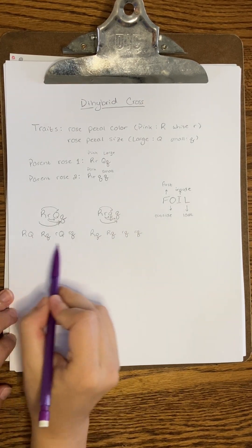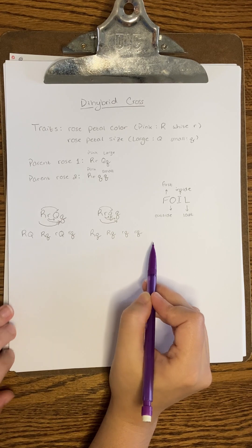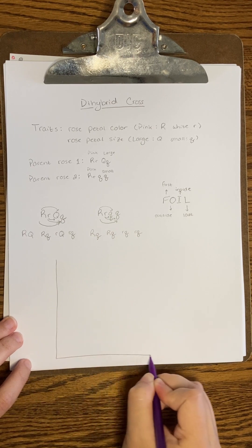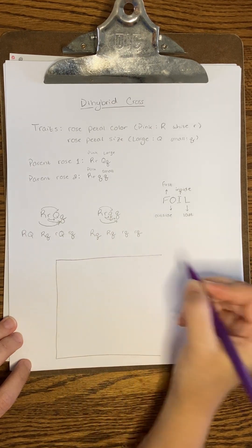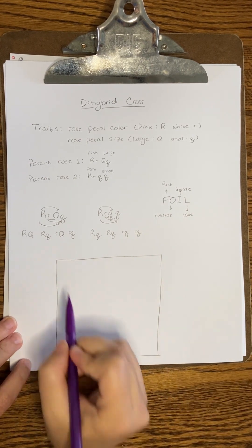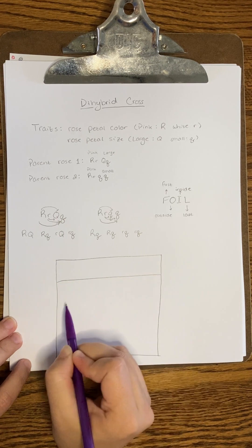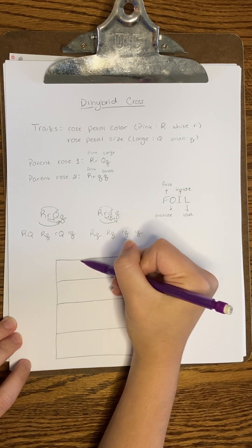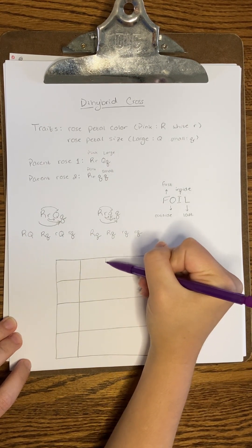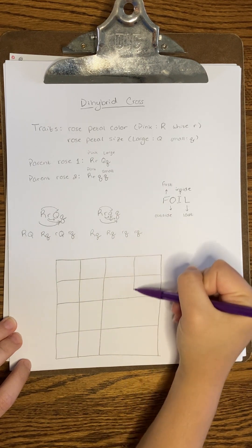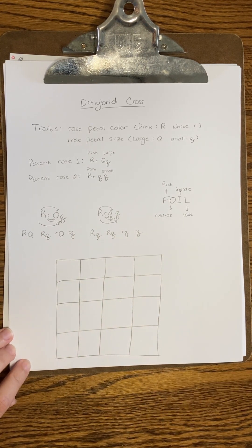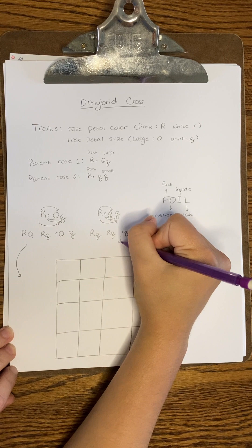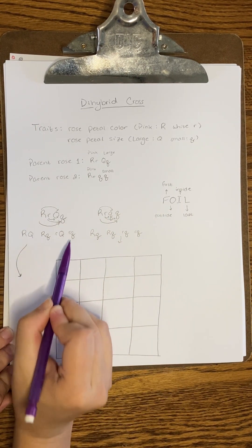Okay, now that we have all of the possible allele combinations, we need to draw our Punnett square. But this time, it needs to have 16 boxes in the middle, instead of four. Be sure your boxes are big enough that you can neatly write four letters in each one. You wouldn't want to do all of this work and then not be able to interpret your results at the end. Just like before, we will place the allele combinations for one parent along the top of the Punnett square, and the allele combinations for the other parent along the left side.